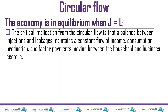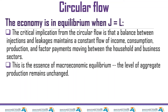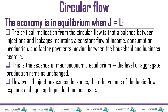The economy is said to be in equilibrium if J is equal to L. When that happens, nothing changes — the economy does not grow, neither does it shrink. This is the essence of macroeconomic equilibrium: the level of aggregate production remains unchanged.